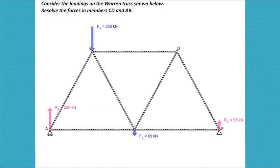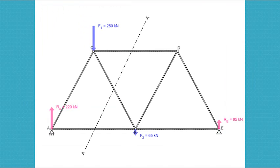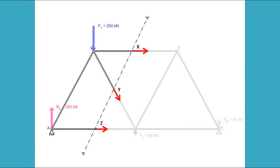The method of sections uses a cutting plane that passes through the three members of the truss. One of these members must be the member being analyzed. The reactions at the supports are calculated if required. However in this example, the reactions RA and RE have already been resolved. Only the part of the truss which is not grayed is considered for the calculation.